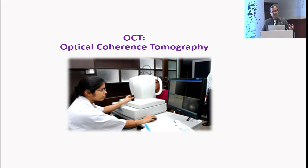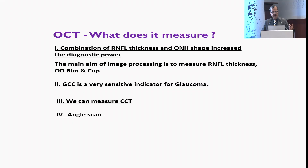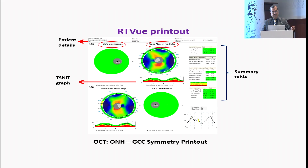You then need to correlate this with an OCT. Here I am taking the help of an OptiView OCT. The main aim of image processing is to measure the RNFL thickness, optic disc rim, and cup. The ganglion cell complex is a vital component, and with this machine we can also measure the CCT and look out for the angle scan.